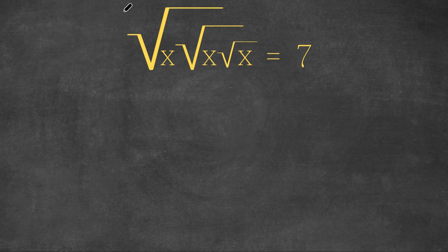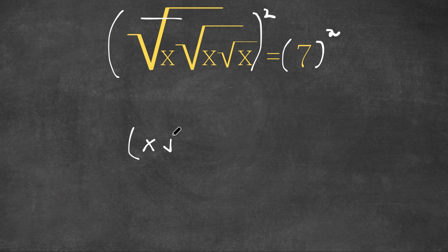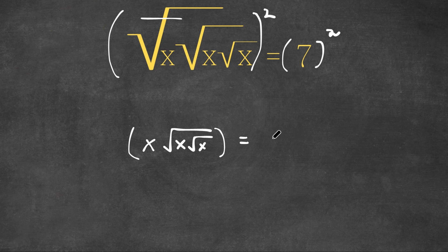So what I'm first going to do is I'm going to square both sides. By doing this, it actually cancels out this square root. So now we simply have x times the square root of x times the square root of x, and this is equal to 7 squared.